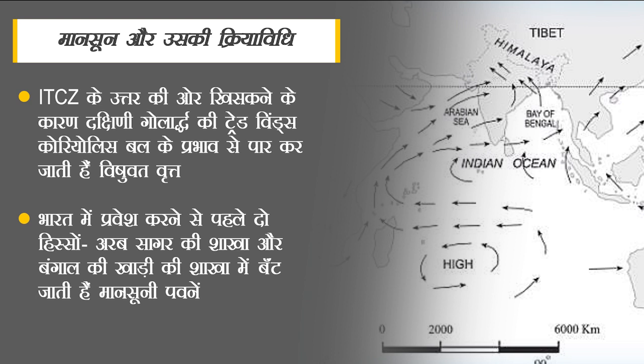जब ये पवनें स्थल पर पहुंचती हैं तो उच्चावच यानी भूवाकृति और उत्तर-पश्चिमी भारत पर स्थित ताप निम्न वायुदाब इनकी दिशाओं को बदल देते हैं। ये मानसूनी पवनें भारत में प्रवेश करने से पहले दो हिस्सों में बंट जाती हैं - एक अरब सागर की शाखा और दूसरी बंगाल की खाड़ी की शाखा। एक हिस्सा अरब सागर की ओर से केरल के तट में प्रवेश करता है और दूसरा बंगाल की खाड़ी की ओर से ओडिशा, पश्चिम बंगाल, बिहार, झारखंड, पूर्वी उत्तरप्रदेश, उत्तराखंड, हिमाचल प्रदेश, हरियाणा और पंजाब में वर्षा करता है।